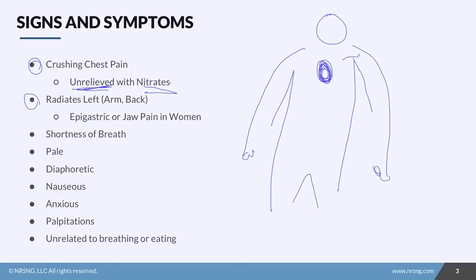The pain can also radiate to the left arm, the back, or the shoulder. In women, it can also present differently. Sometimes they might have epigastric pain, or they might feel like they are having heartburn, or they might even complain of jaw pain. Those are some of the differences we'd see between a male patient and a female patient who might be experiencing MI.